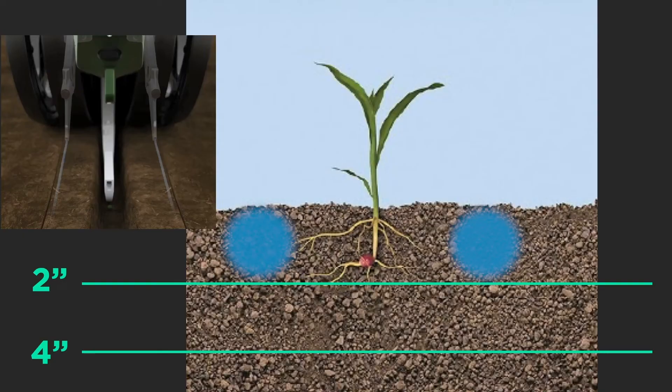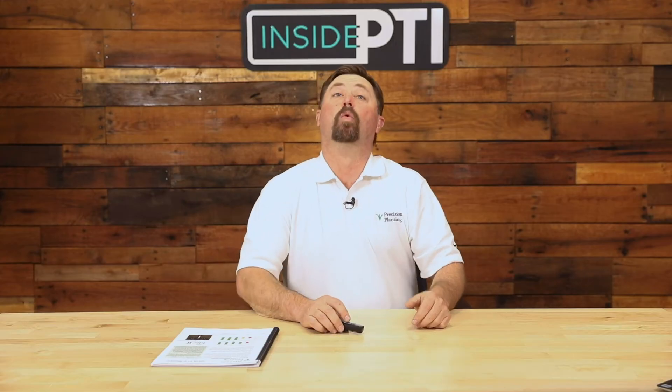The blue dots on the diagram indicate where the application point is when we're using Conceal to apply potassium — shown here alongside a young corn seedling.